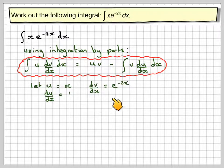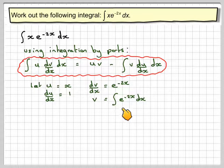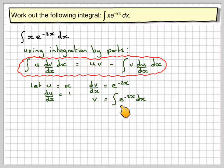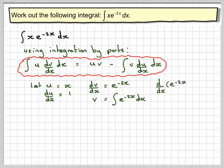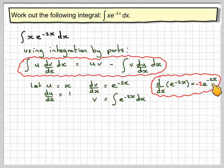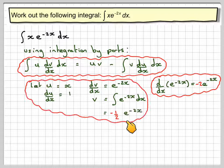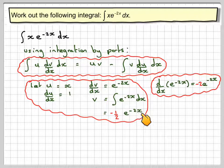The dv by dx is e to the minus 2x. If you integrate, v equals e to the minus 2x. If you differentiate e to the minus 2x, you get minus 2 e to the minus 2x, so the integral of this becomes minus a half e to the minus 2x.